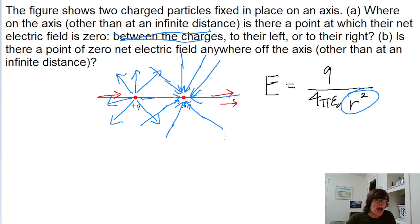No matter how far to the right of this system we go, the rightmost charge, the negative 3Q, will always have a stronger effect than the leftmost charge. Because anywhere we are to the right of this system, not only does the negative 3Q charge have a stronger magnitude, but it's also always going to be closer to us, no matter how far to the right we are.